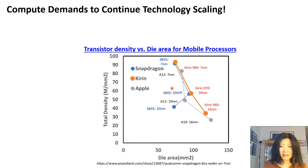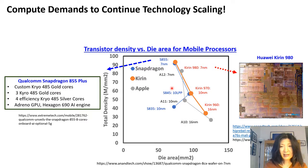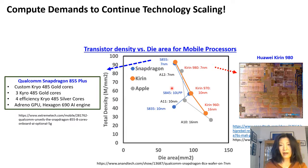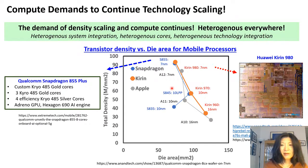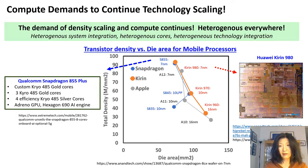Density scaling is continuing and demand is there. Through reverse engineering of mobile processors — Qualcomm and Huawei Kirin chips — we notice they are very heterogeneous cores. Not only multi-cores, but they use GPU, neural processor, and CPU — multiple of these combined, working synergetically to bring up system performance. Demand for density scaling and compute continues, and what we see everywhere is heterogeneity and heterogeneous system integration.